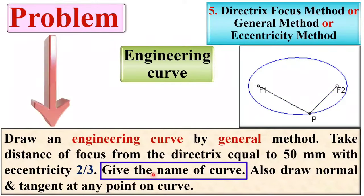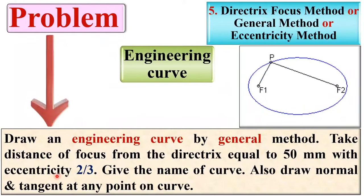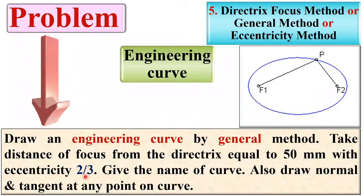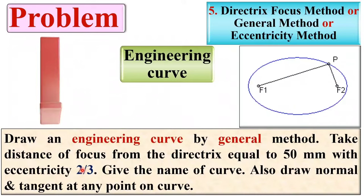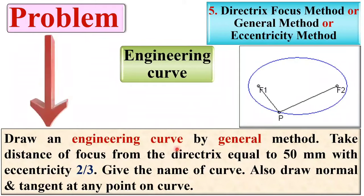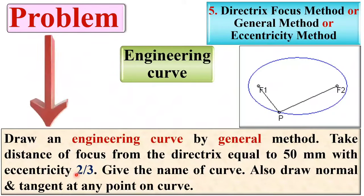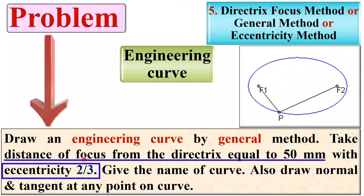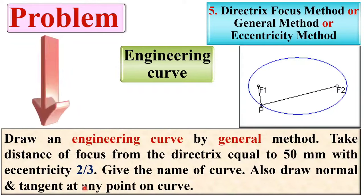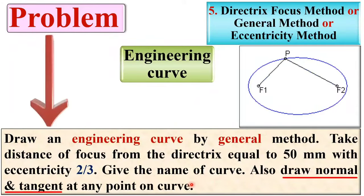The question asks for the name of the curve. Look at this important data: eccentricity is 2 by 3, which is less than 1. That is why it must be an ellipse. So, the name of the curve is ellipse. We have to follow the general method because it is mentioned in the description. If not mentioned, you should still follow the general method when eccentricity and the distance of the focus from the directrix are given. At last, we will draw the normal and tangent at any point on the curve.